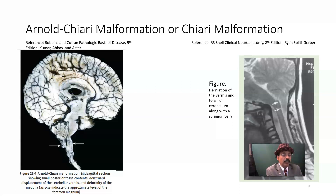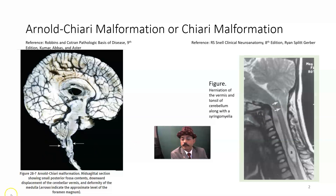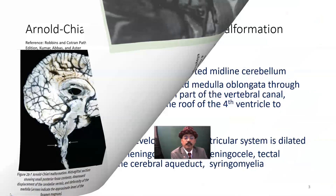— the third ventricle, the fourth ventricle — all the ventricles will be dilated because of excessive accumulation of cerebrospinal fluid. We call this internal hydrocephalus. Here we can see the herniation, and here is the foramen magnum. The medulla oblongata is displaced and the cerebellum appearance has been changed and distorted.